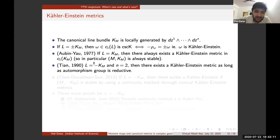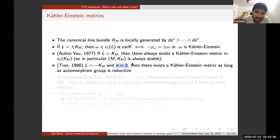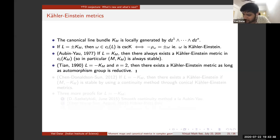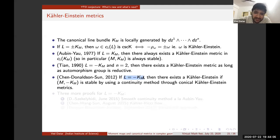In the Fano case, where the anti-canonical bundle K_M^{-1} is positive, K-stability is actually needed. In complex dimension 2, Tian proved in the late 1980s and early 90s that a Kähler-Einstein metric exists as long as the automorphism group is discrete, and he also formulated the first precise version of K-stability. Very recently, Chen, Donaldson, and Sun proved that K-stability is sufficient for the existence of Kähler-Einstein metrics when L = K_M^{-1}, using the continuity method through conical Kähler-Einstein metrics.